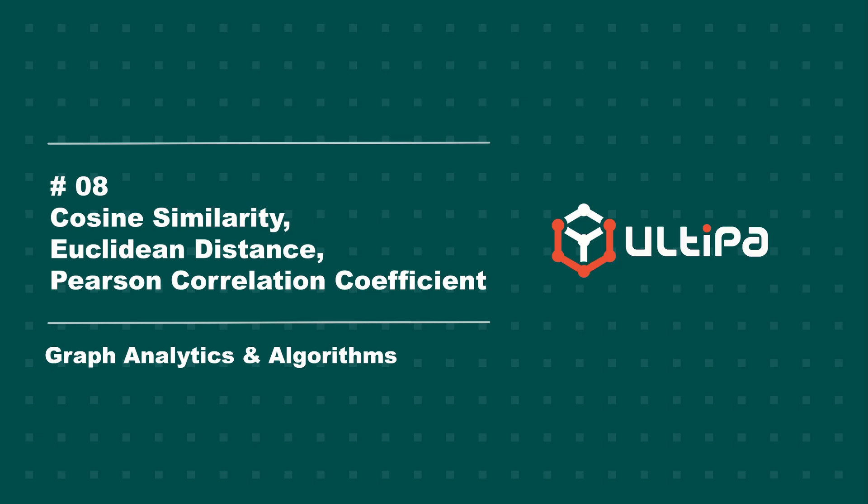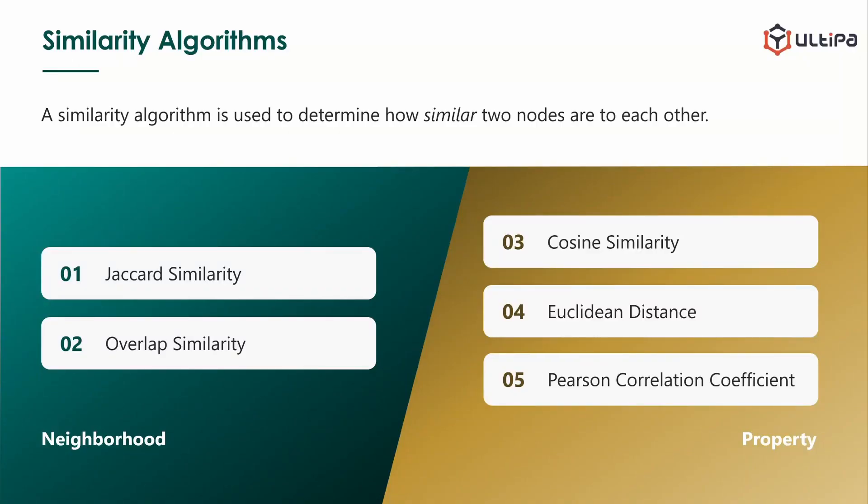Welcome back. This is part 2 of graph similarity algorithms. In the previous video, we covered Jaccard similarity and overlap similarity. Their calculation is based on the neighborhood.